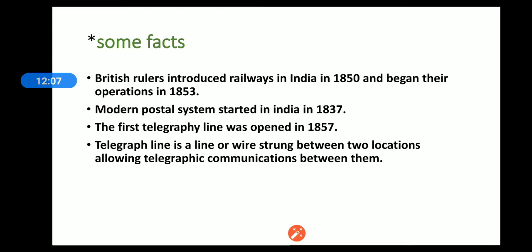Some key facts: British rulers introduced railways in India in 1850 and began their operations in 1853. You should remember these two dates — railways were introduced in 1850, but operations started in 1853.